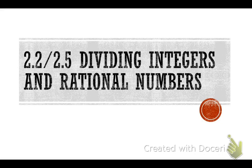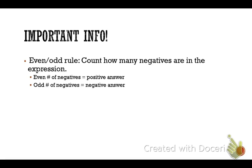Today we're working on dividing integers and rational numbers. You'll see some pretty strong similarities between dividing integers and what we did yesterday with multiplying integers and rational numbers. Starting with the fact that they have the same rule, the even-odd rule. If there's an even number of negatives, it's a positive answer. If there's an odd number of negatives, it's a negative answer.